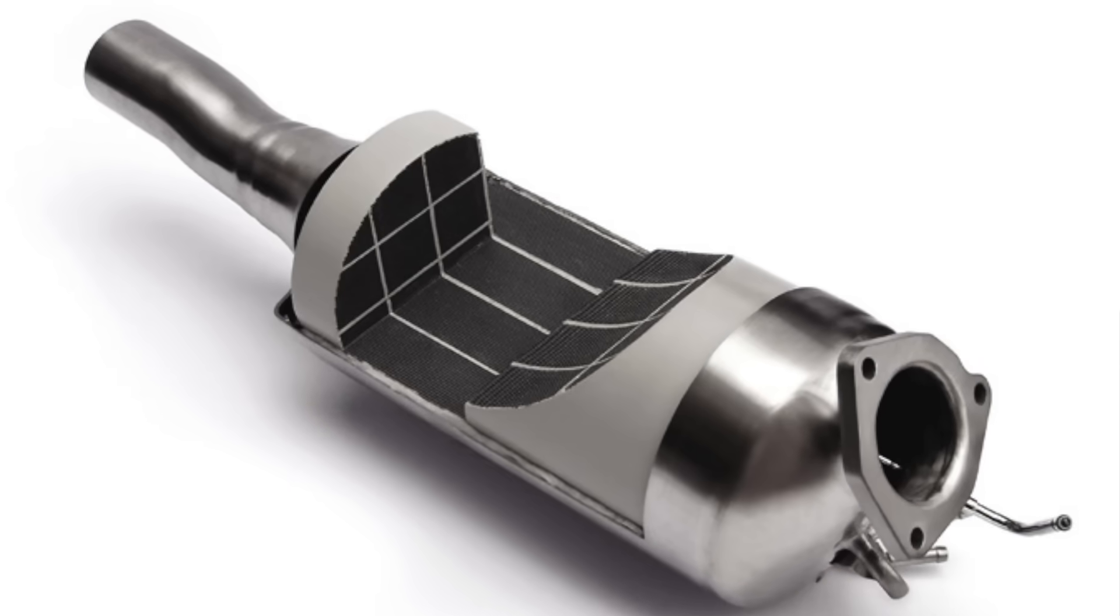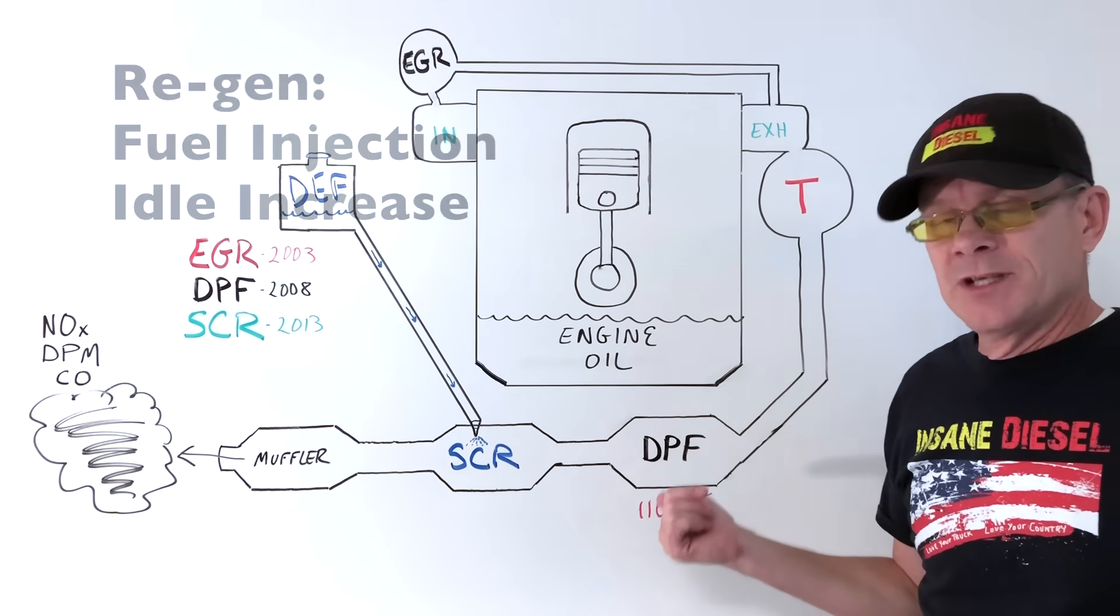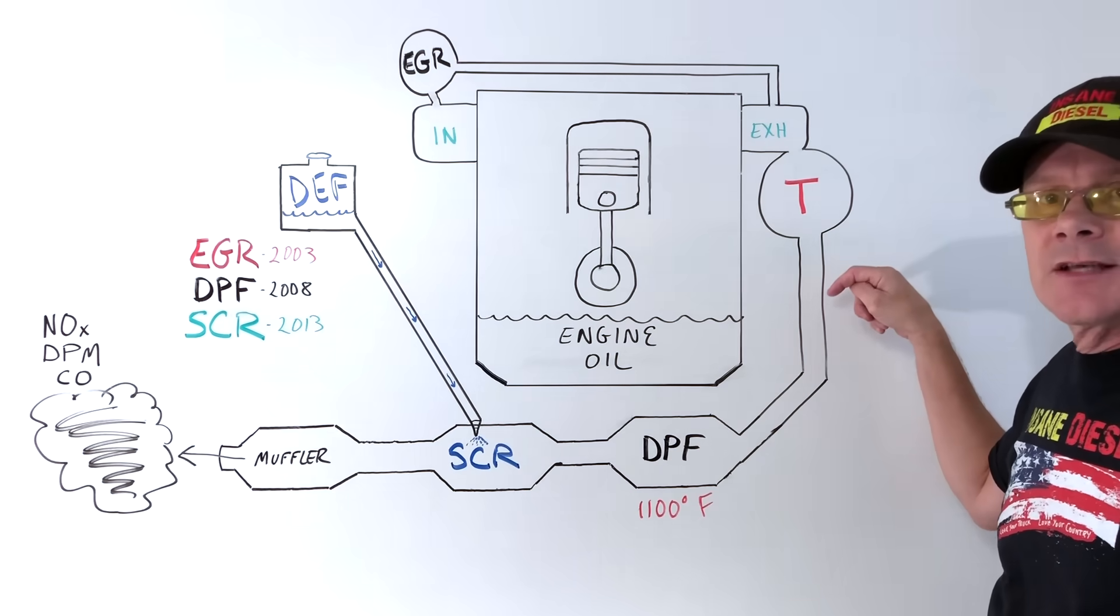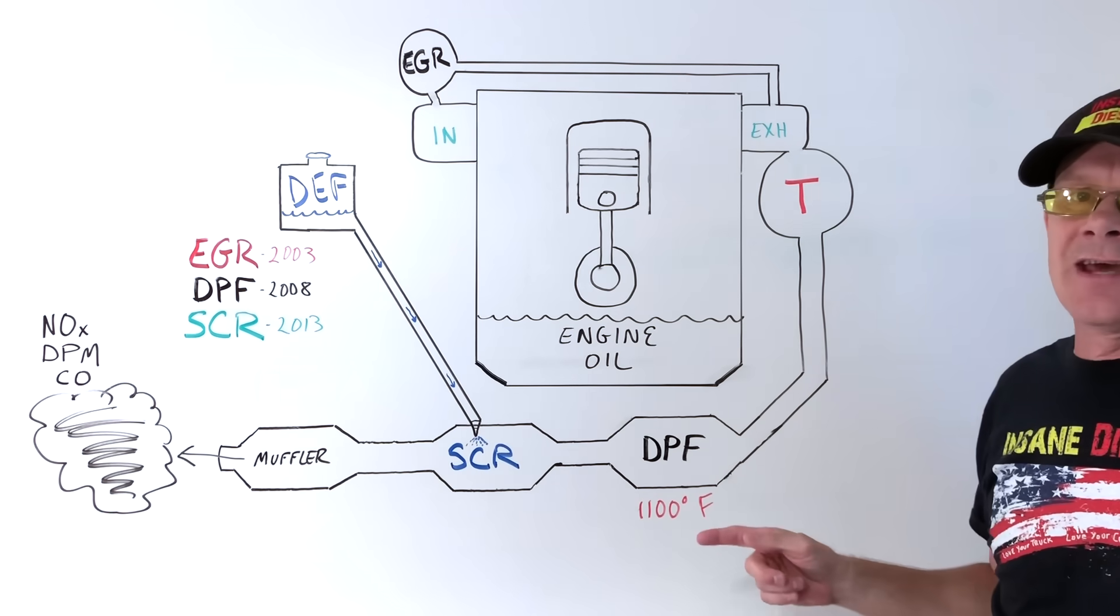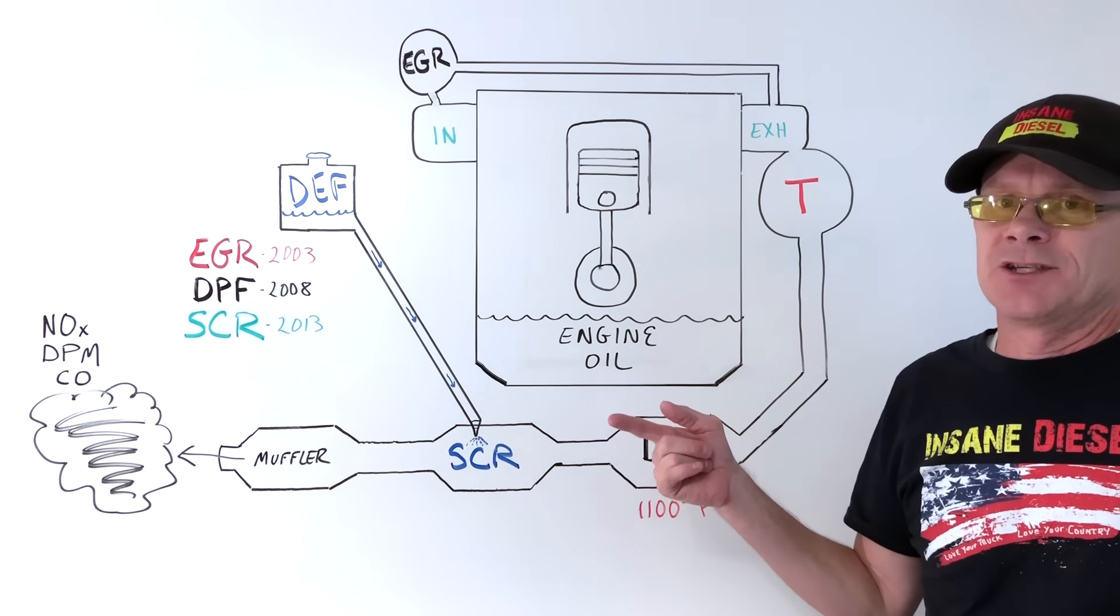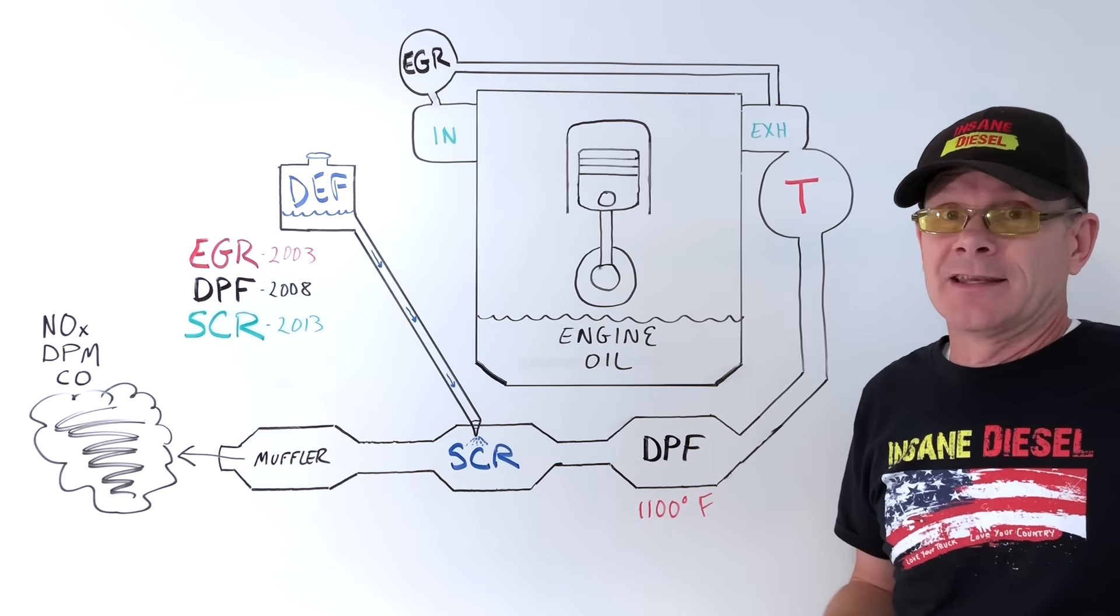When buildup occurs, the engine computer will put the DPF in regen mode, or regeneration mode. This includes injecting fuel into the exhaust to heat up the DPF to over 1100 degrees in order to burn off the particulate matter into ash. That means fuel is used to make heat only and doesn't go towards engine power. The DPF is where your gas mileage really takes a hit.